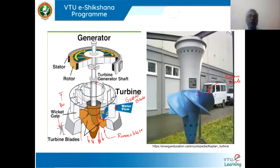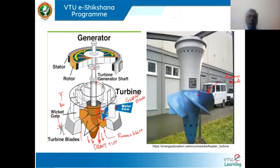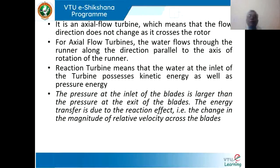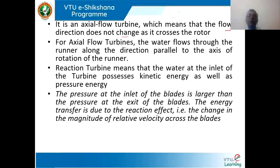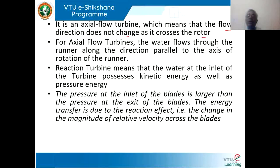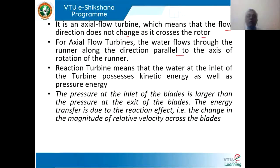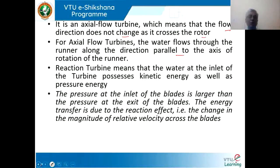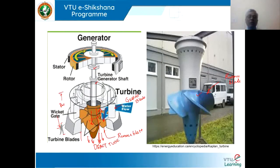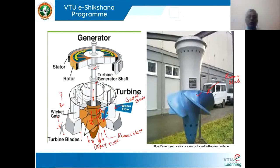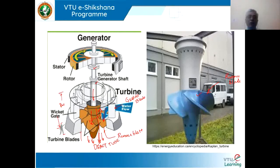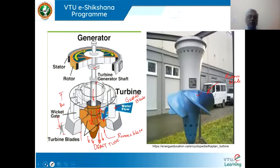The water flows and rotates, and there will be the draft tube below. The axial flow turbine means the flow direction does not change as it crosses the runner. The water flows along the runner in the direction parallel to the axis of rotation. The flow will be only in this direction — the water flows in this direction and goes to the tail race in the same direction.